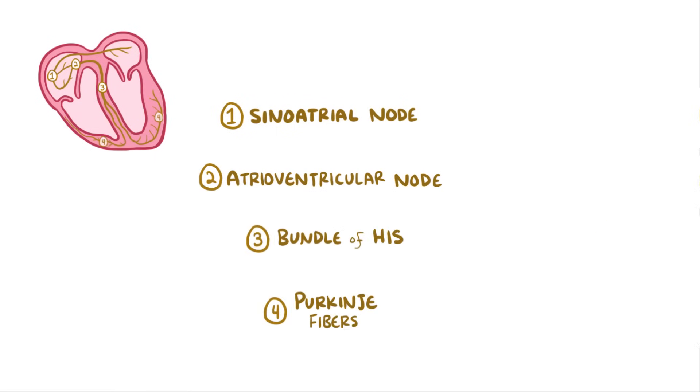Now, the interesting thing is that in addition to the pacemaker cells in the SA node, cells in the AV node, the bundle of Hiss, and the Purkinje fibers all have the ability to generate an electrical potential. Those last three are called latent pacemakers, and they have slower depolarization rates, which is the rate at which they fire off electrical signals, and they get slower as you move further down.